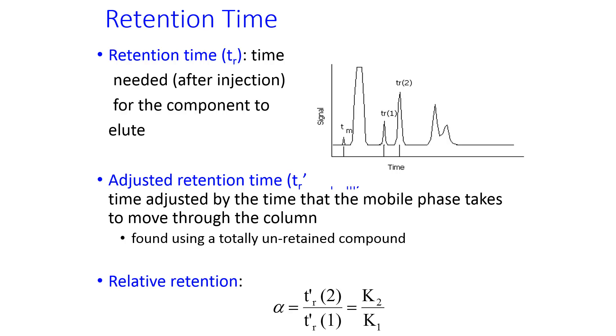And the way you can find this out, for example, in the chromatogram shown here, Tm is the migration time for something that's totally unretained. In this case, it was butane. And then the retention time for 1 and 2 are butanol and propanol, the time that it takes. And so the adjusted retention time for butanol and propanol is their retention time, tr1 and tr2, minus Tm.